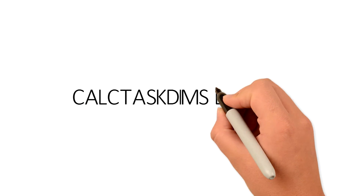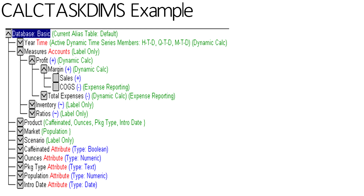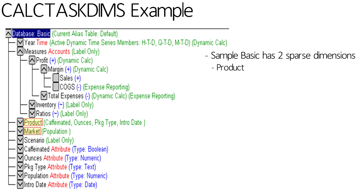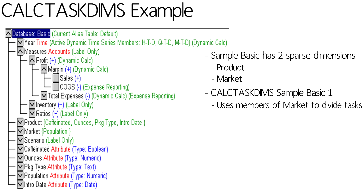So we're going to take this massive outline for Sample Basic. It actually only has five stored dimensions: year, measures, product, market, and scenario — the rest are attribute dimensions. But of those dimensions, only two of them are actually sparse: product and market. So if I say CalcTaskDims sample basic one, it's going to start from the bottom of my outline upward with the last sparse dimension.